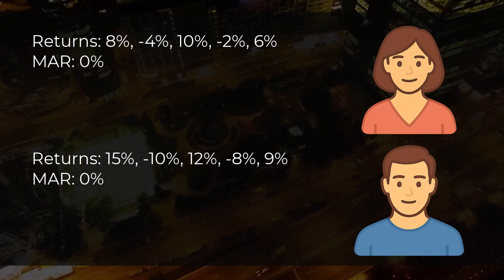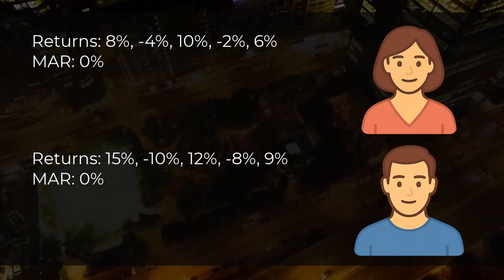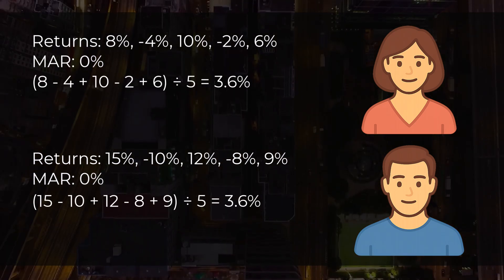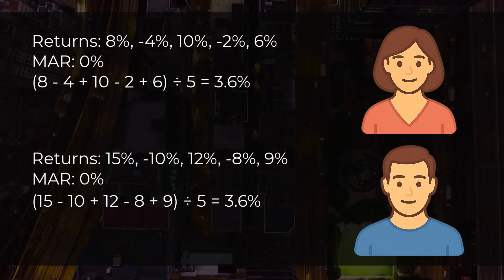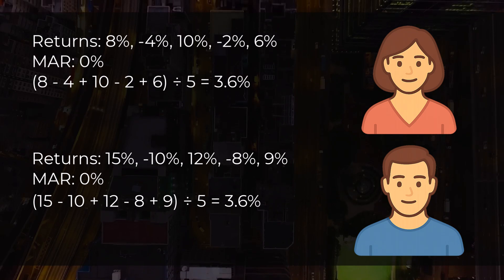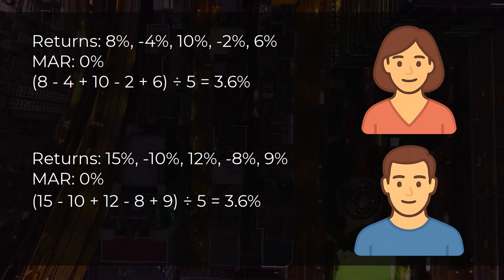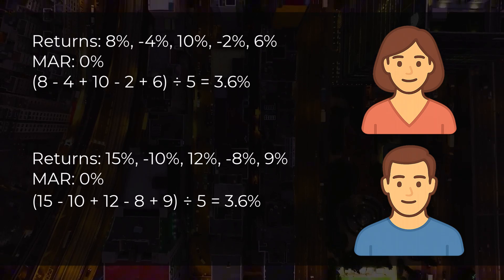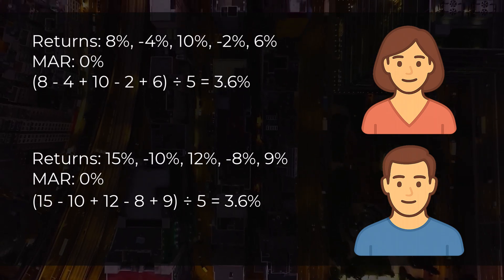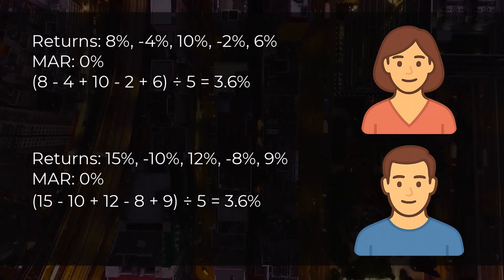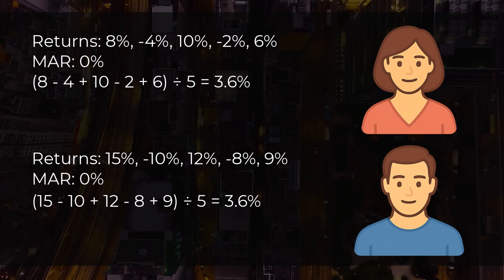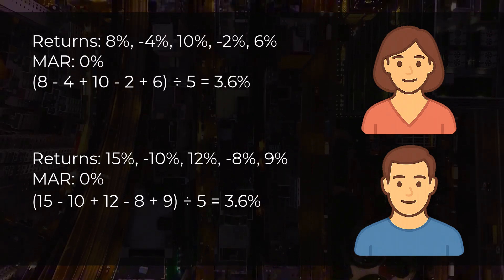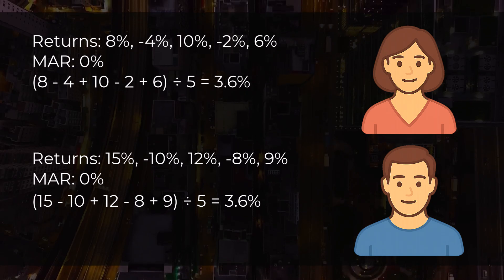To calculate the average returns for Sarah and Mike, we add and subtract the returns per year and then divide by 5. For Sarah, the calculation comes to a total of 3.6% average return over these years. And for Mike, coincidentally, he also has a 3.6% return over the last 5 years. But the big question is: are these equally good investments?